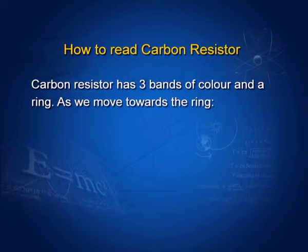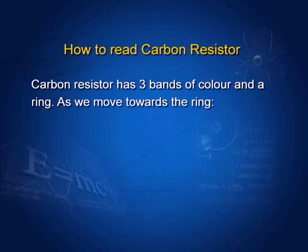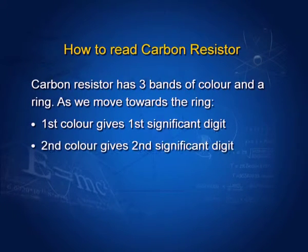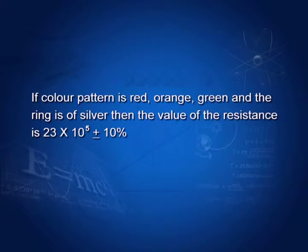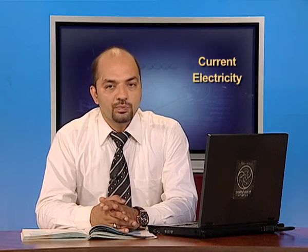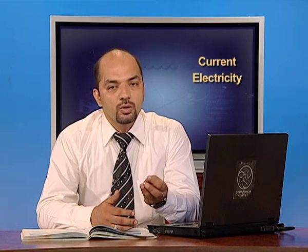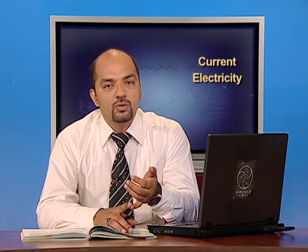A carbon resistor has three bands of color followed by a ring. To read the value, move towards the ring: the first color gives the first significant digit, the second color gives the second significant digit, the third color gives the multiplier, and the ring gives the tolerance. For example, a color pattern of red, orange, green with a silver ring gives 23 × 10⁵ ± 10%. Tolerance: gold ring = 5%, silver ring = 10%, no color = 20%.